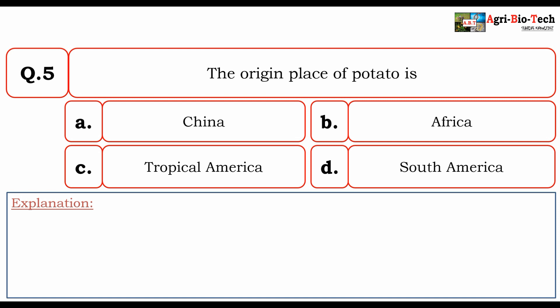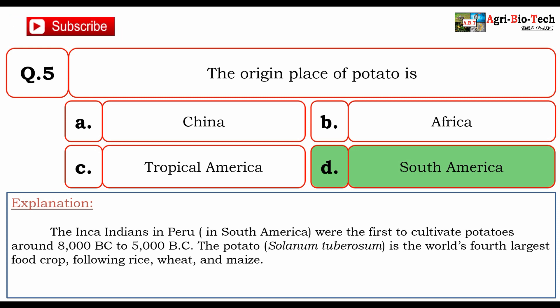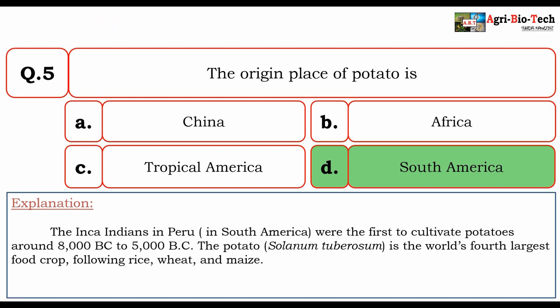The correct option is D. South America. The Inca Indians in Peru were the first to cultivate potatoes around 8000 B.C. to 5000 B.C. The potato is the world's fourth largest food crop following rice, wheat, and maize. Its botanical name is Solanum tuberosum. So the correct answer is D. South America.